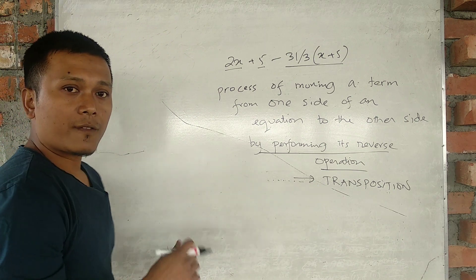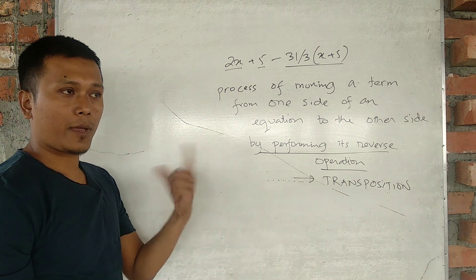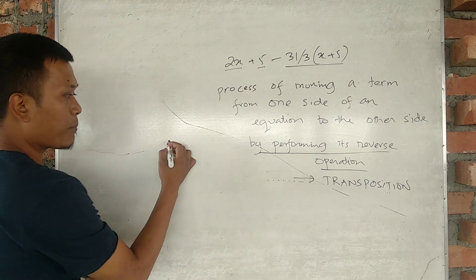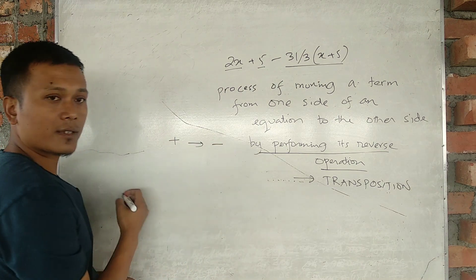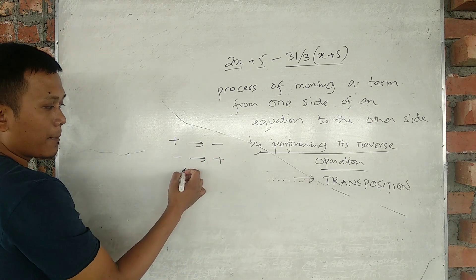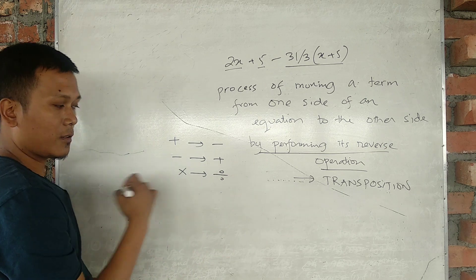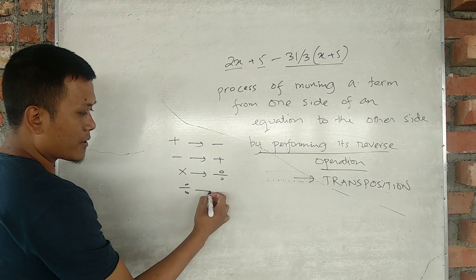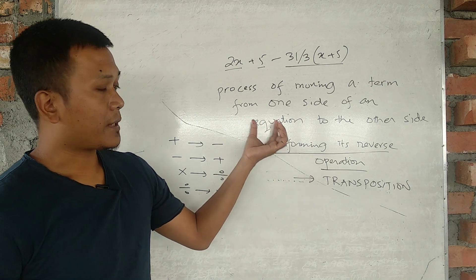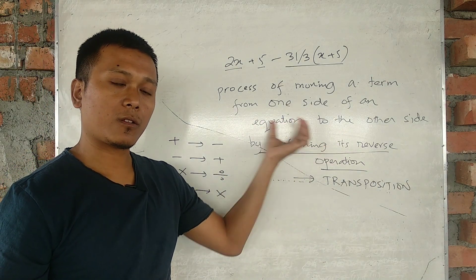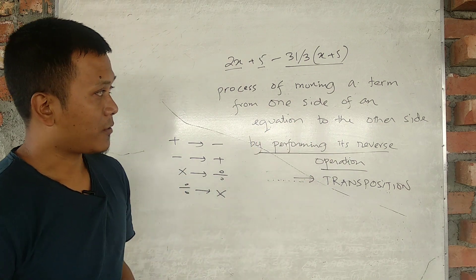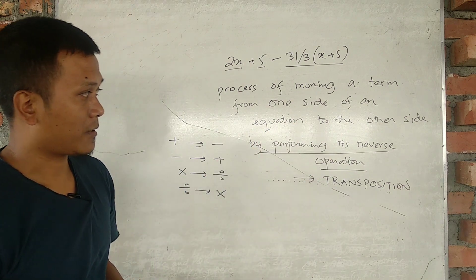The reverse operations are as follows: Plus reverse is Minus. Minus reverse is Plus. Multiply reverse is Divide. Divide reverse is Multiply. So we always apply the reverse process during transposition.